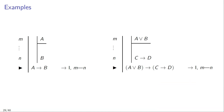Here are two examples of correct applications of conditional introduction. First: if under the supposition that A you can infer B, then you are licensed to conclude if A then B, citing conditional introduction applied to lines M to N. Second, a more complex example: if under the supposition that A or B you can infer the conditional if C then D, then you are licensed to conclude that if A or B, then if C then D, justifying this by citing conditional introduction applied to lines M to N.